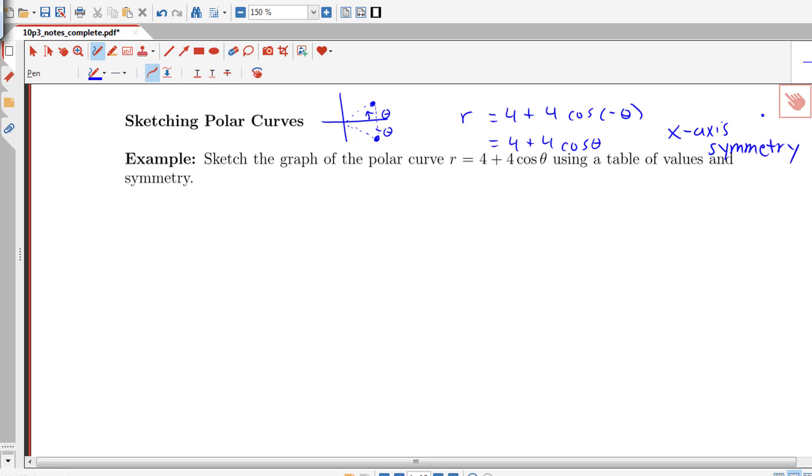That'll be useful when doing our sketch. Let's make our table of values. I have theta and r here. So I'll do theta here at 0, pi thirds, pi over 2, 2 pi thirds, and pi.